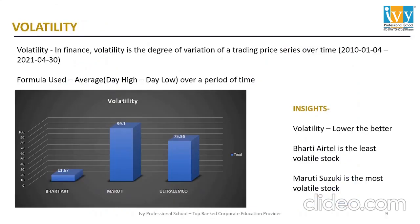The first parameter is volatility, which means the variation of trading price over a period of time. The timeframe considered here is from 4th January 2010 till 30th April 2021. The formula used is the average of (day high minus day low) over the period of time.